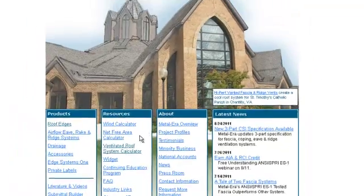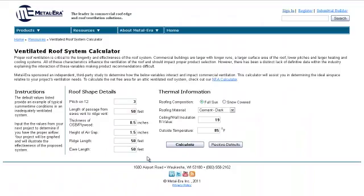The calculator is found on Metal Era's website, Metalera.com, and it's a great tool for determining if your roof ventilation system has the correct amount of net free area or NFA.